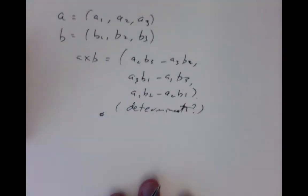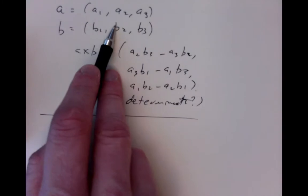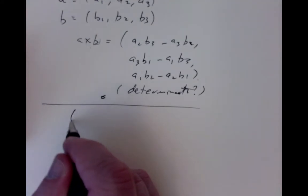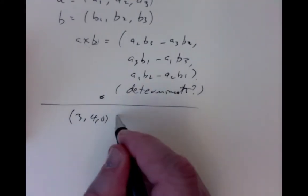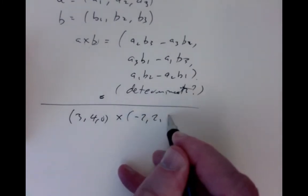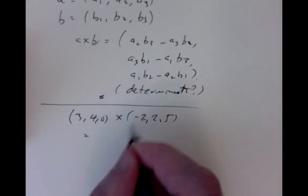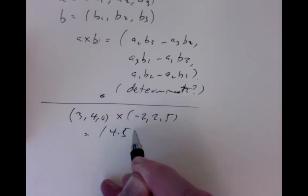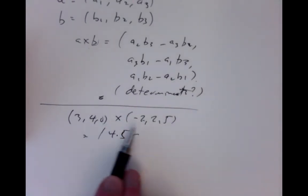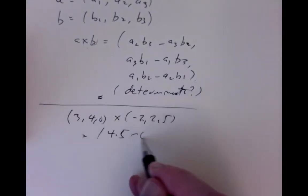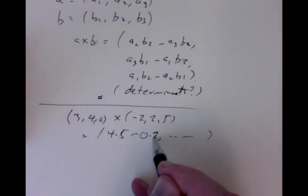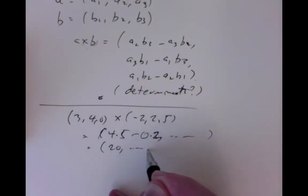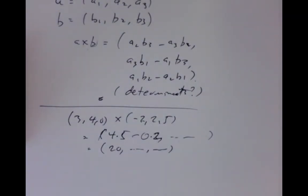For a simple example, remember that inputs are vectors and the output is also a vector — if you don't get a vector, you got it wrong. If we take (3, 4, 0) cross product with (−2, 2, 5), then the first component is A2·B3 − A3·B2, which is 4×5 minus 0×2, giving 20, and so on for the other two components.